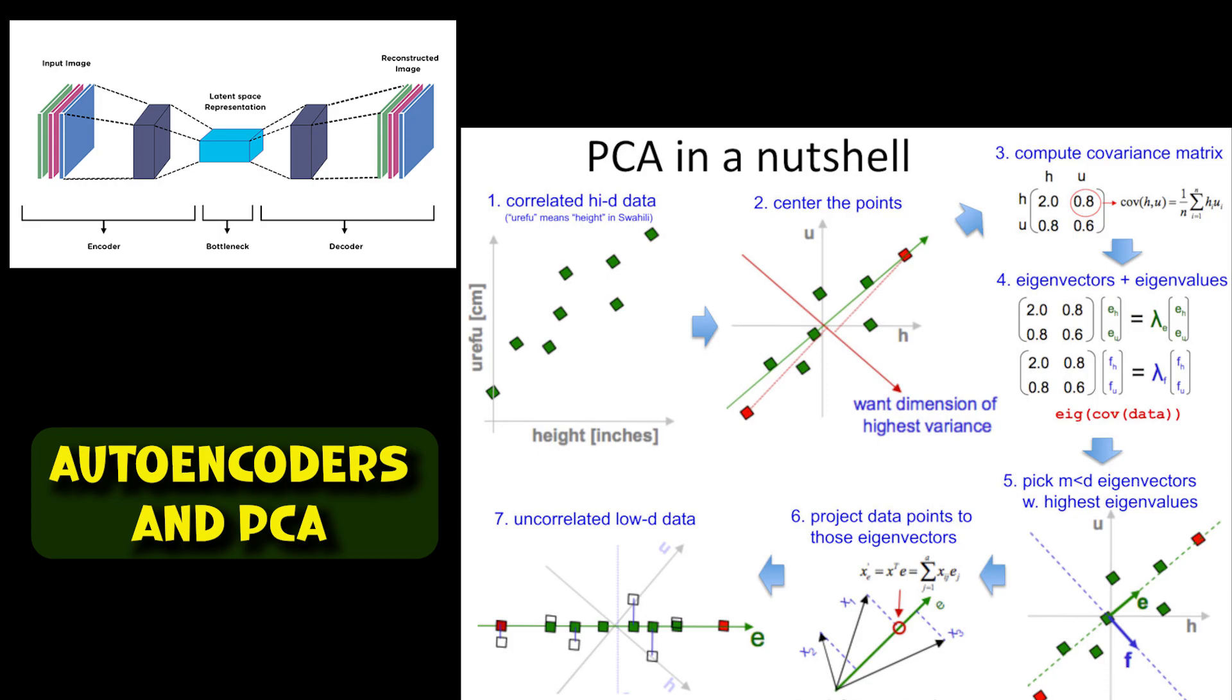Now, the architecture of an autoencoder consists of first an input layer, which takes the original high dimensional data, then an encoder, which is a series of layers that progressively reduce the dimensionality of the data, and a latent space, the lower dimensional representation of the input data. And also, we need a decoder, which is a series of layers that progressively increase the dimensionality to reconstruct the original data. And finally, we need the output layer, which provides a reconstructed data.